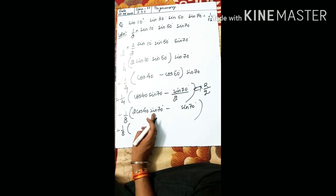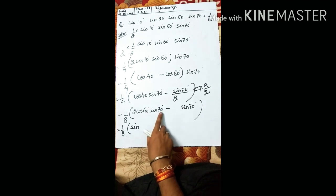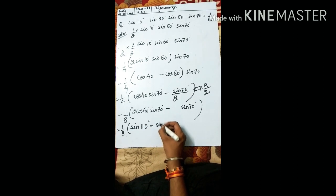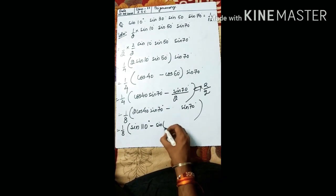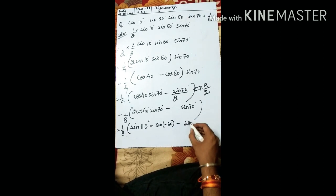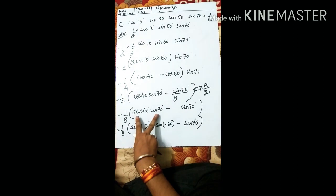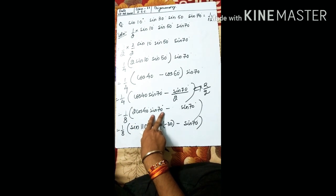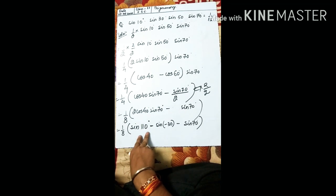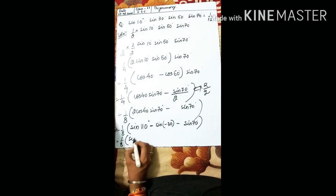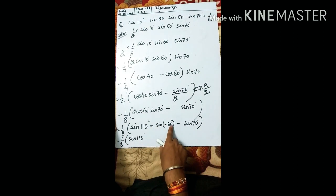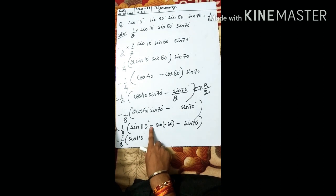Apply 2cosxsiny = sin(x+y) - sin(x-y) to 2cos40° · sin70°: sin(40+70) - sin(40-70) = sin110° - sin(-30°). Since sin(-30°) = -sin30°, the two minuses give +sin30° = +1/2. So we have [sin110° + 1/2 - sin70°] / 8.